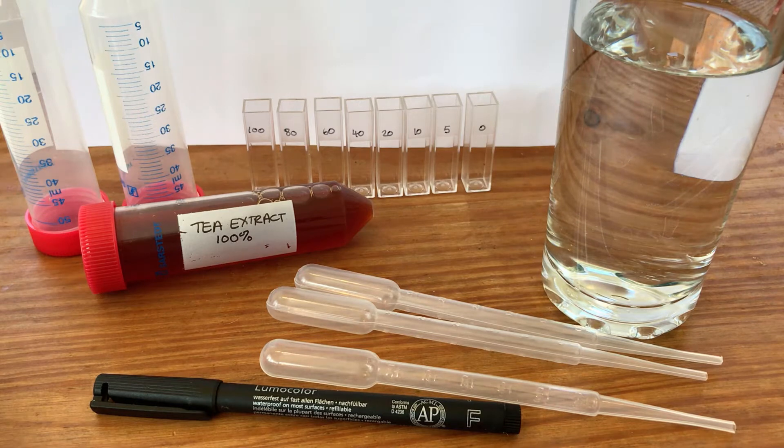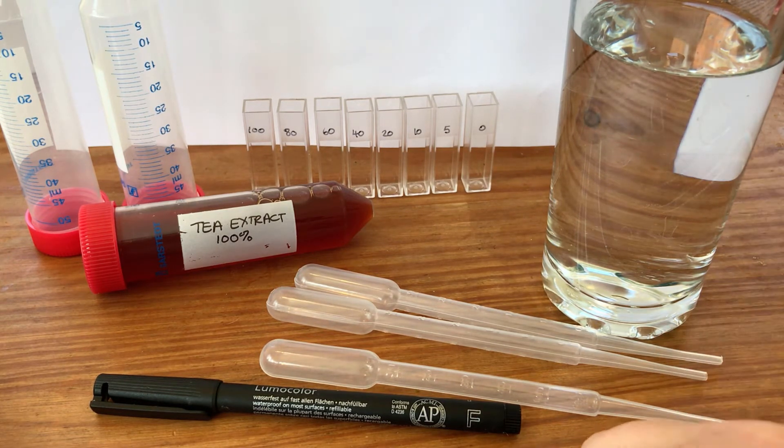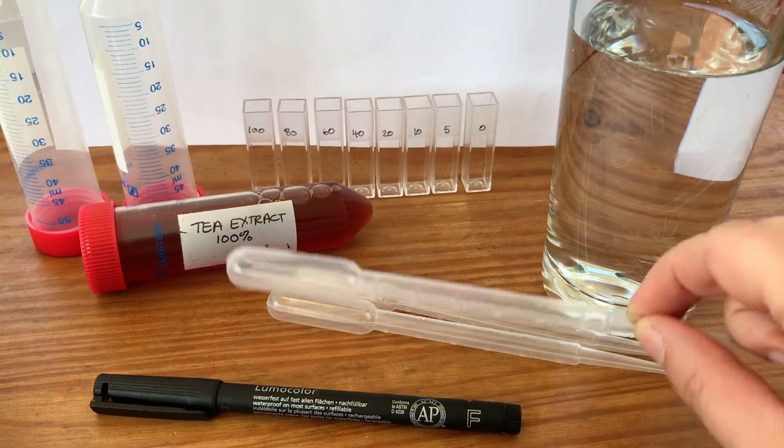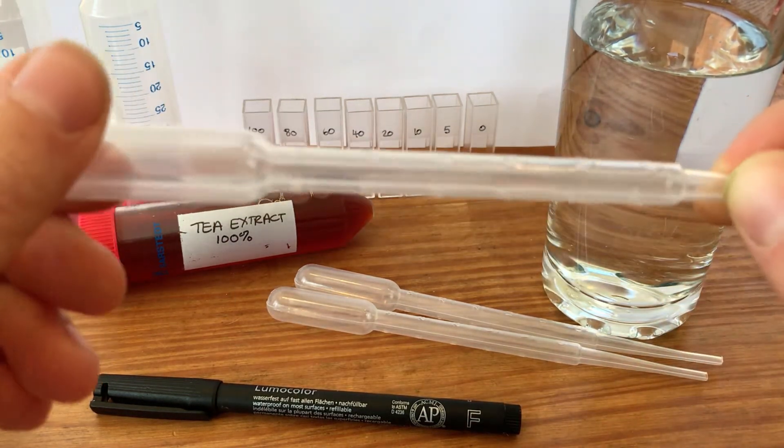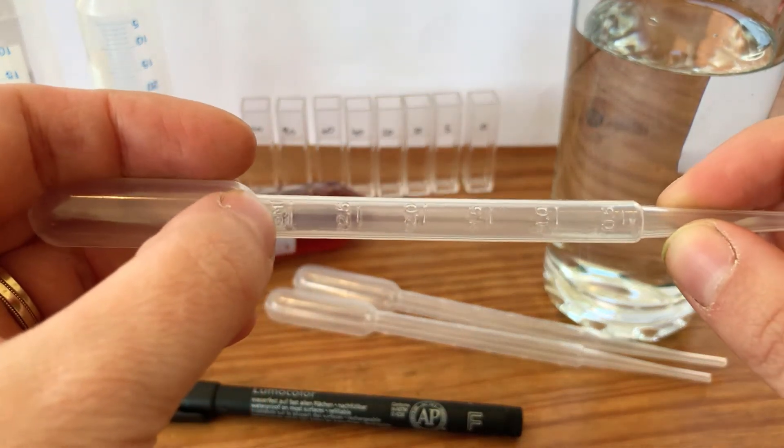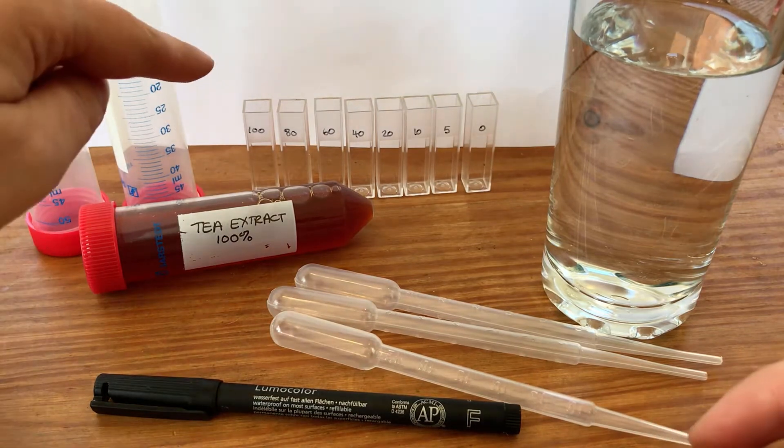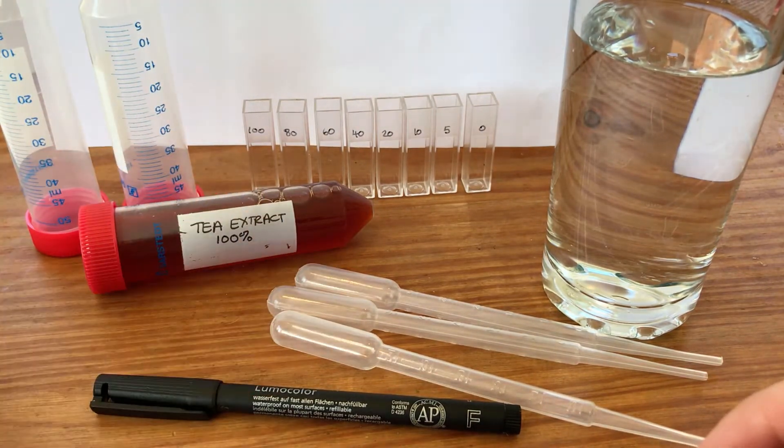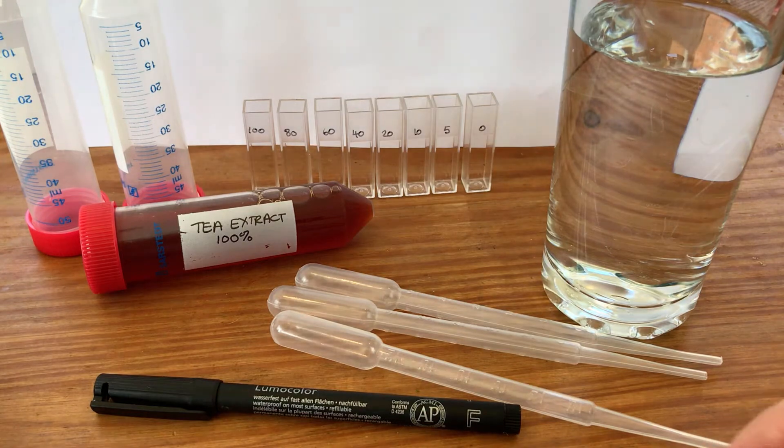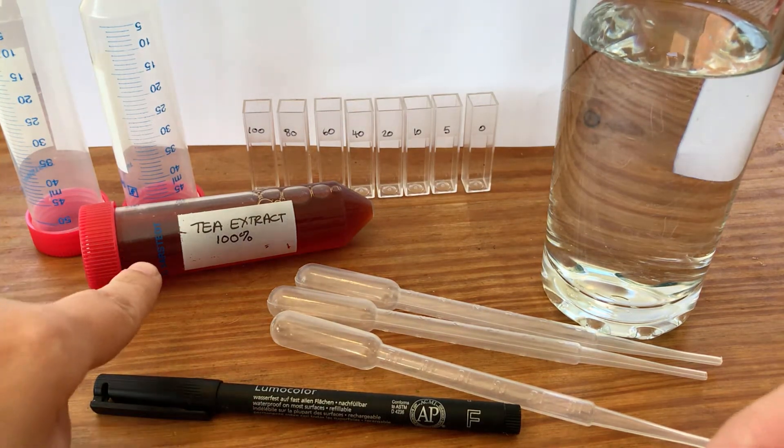For this you are going to need some water, just tap water, a marker pen for labelling things, some of these squidgy pipette things that will pipette up to three mils each, a bunch of cuvettes that I've pre-labeled with the different dilutions we're going to make up, a couple of these 50 mil centrifuge tubes, and then an extract of tea.